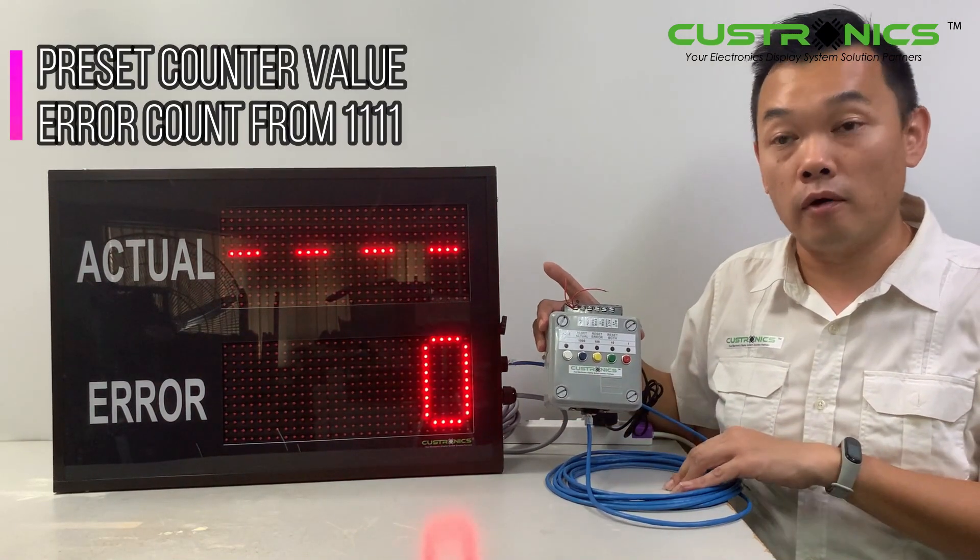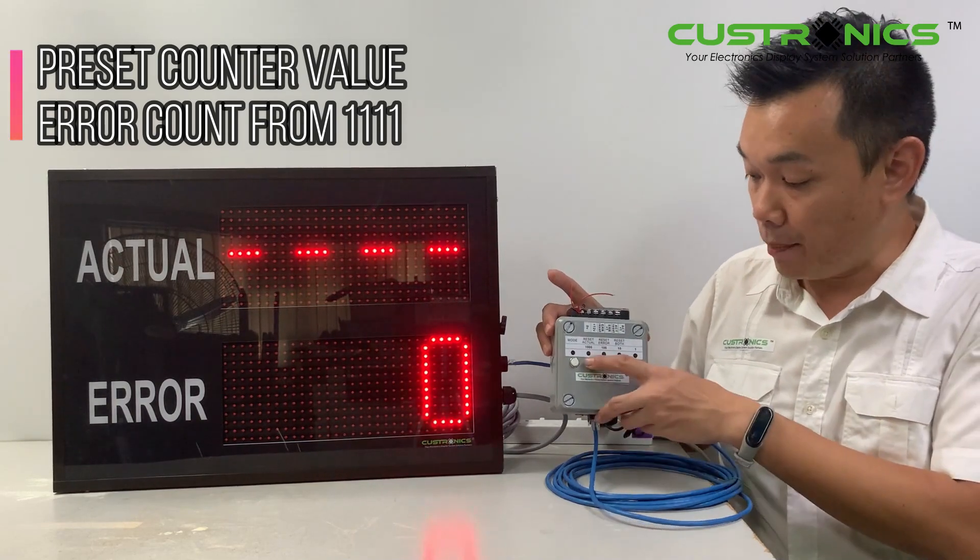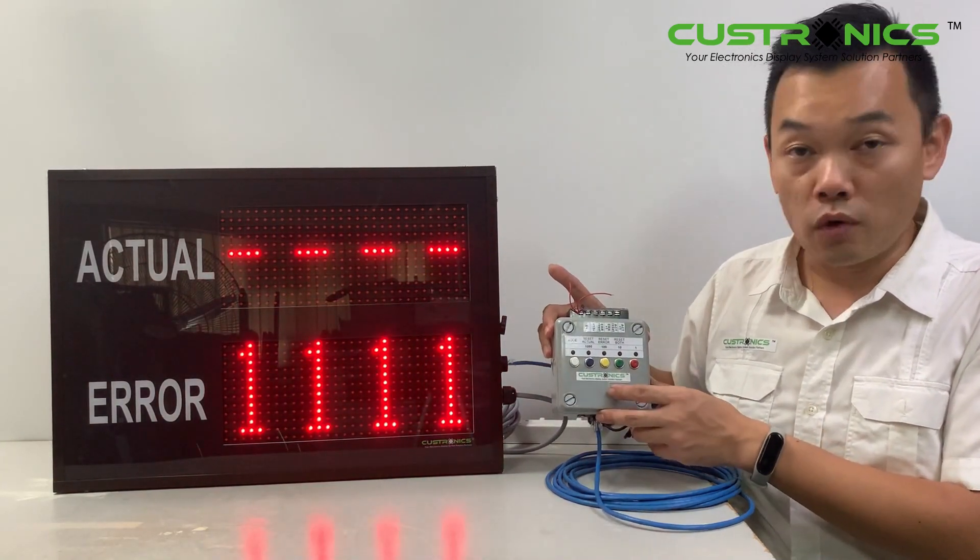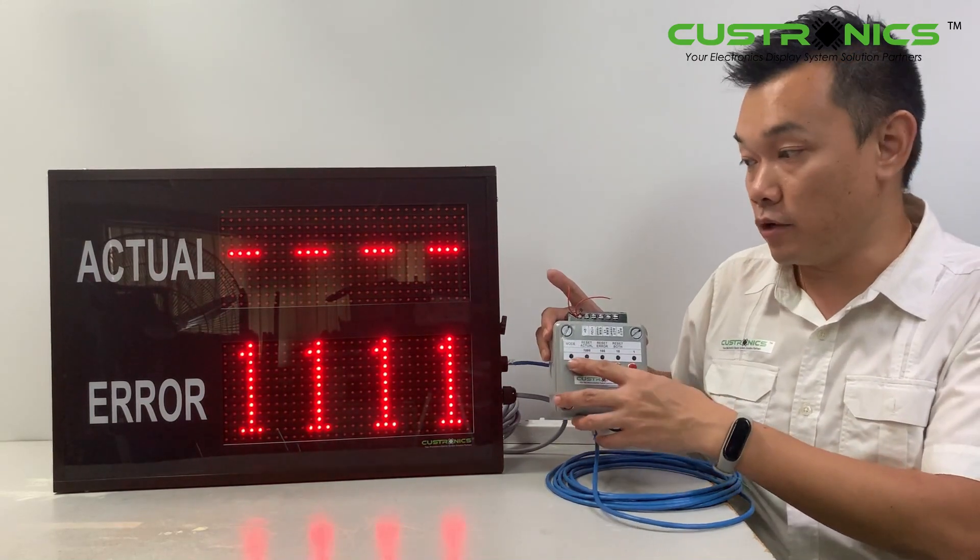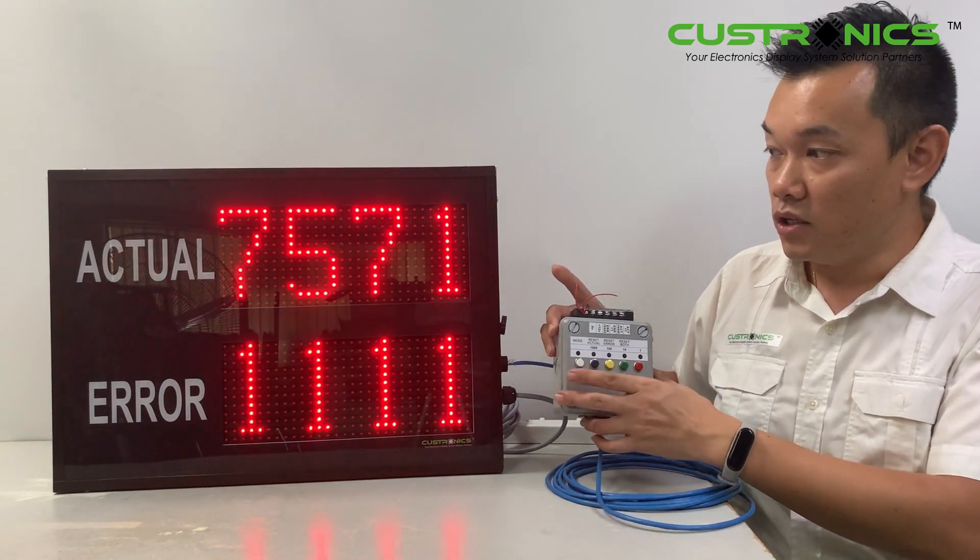Let's say today I want to count from 1111. I press 1111. Once I do the settings, press and hold. That's it. This is how it looks.